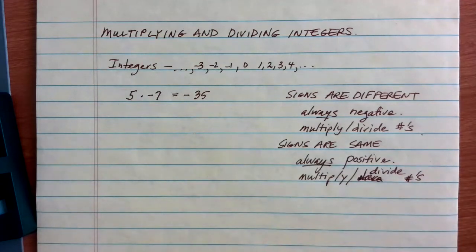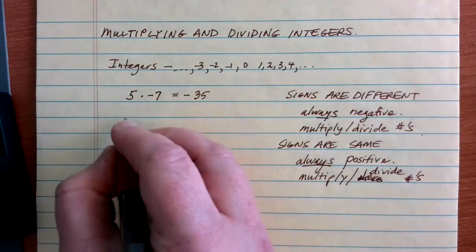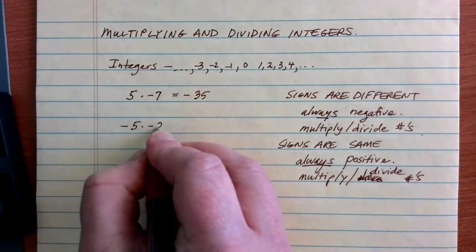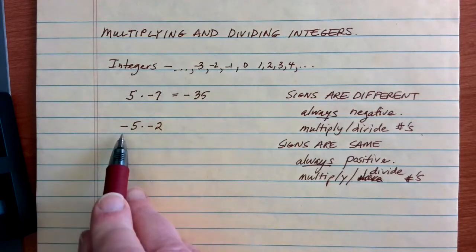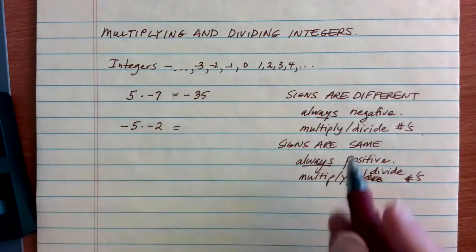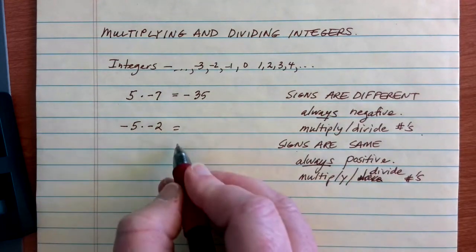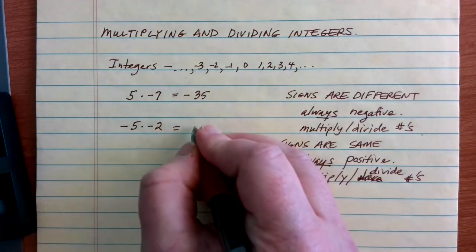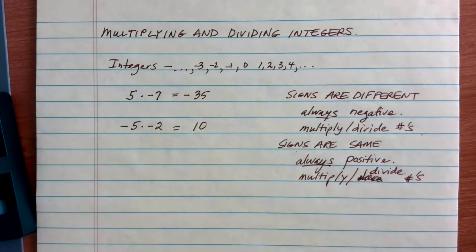So, let's say, for example, we had something like negative 5 times negative 2. In this case, I'm multiplying numbers. They're both negatives, so my signs are the same, which means my answer is going to be positive. Then I multiply the numbers together. 5 times 2 ends up giving me 10 as a solution.